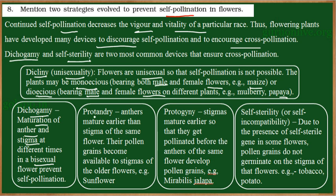Dichogamy can be protandry or protogyny. In protandry, anthers mature earlier than the stigma of the same flower, so pollen grains become available to the stigma of older flowers. In protogyny, the stigma matures earlier so that it gets pollinated before the anther of the same flower develops.